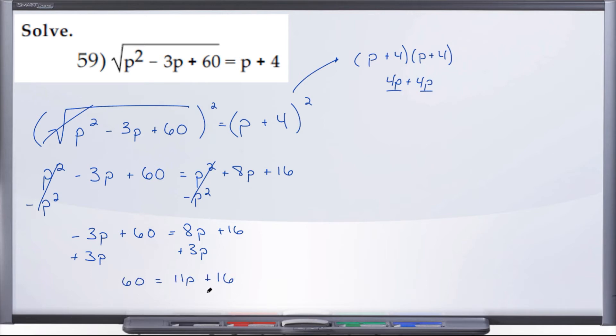Now we'll subtract 16 from both sides, and we have 60 minus 16, that's 44 equals 11p. We'll divide by 11 on both sides, and so p equals 4.